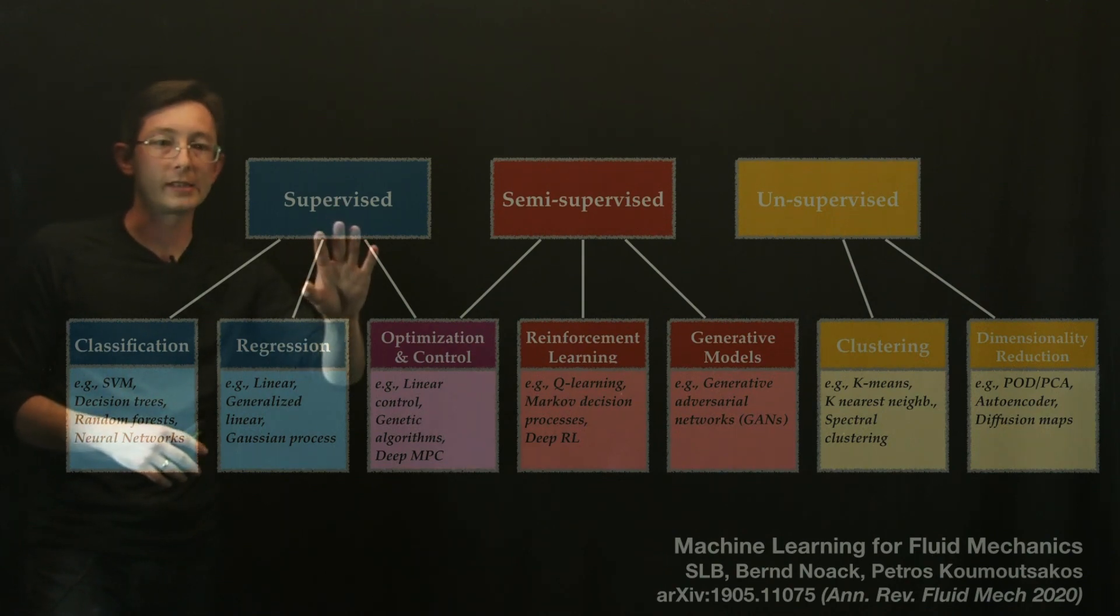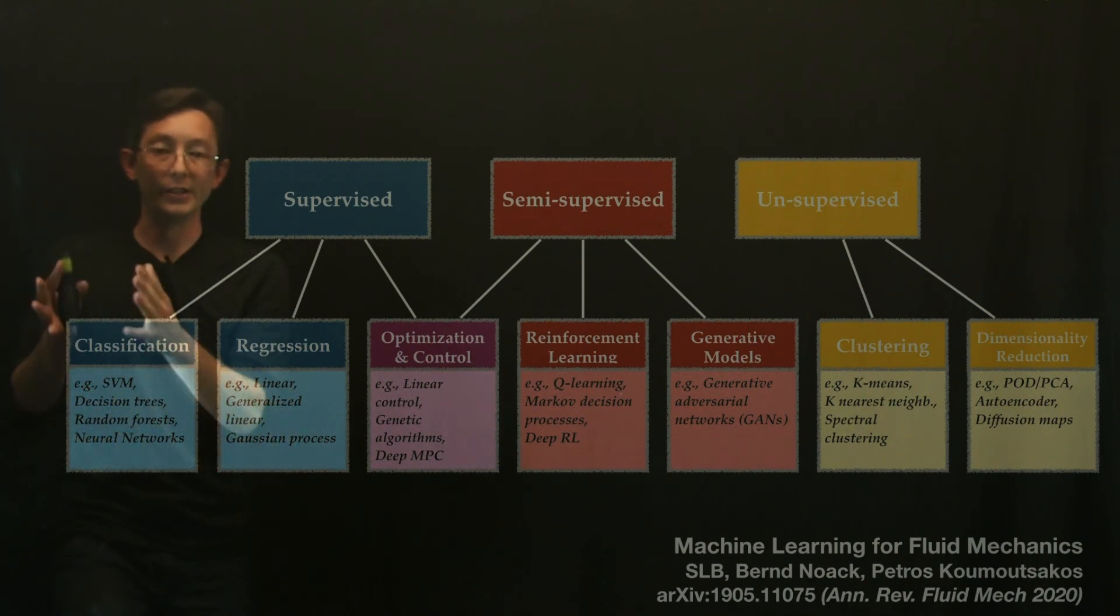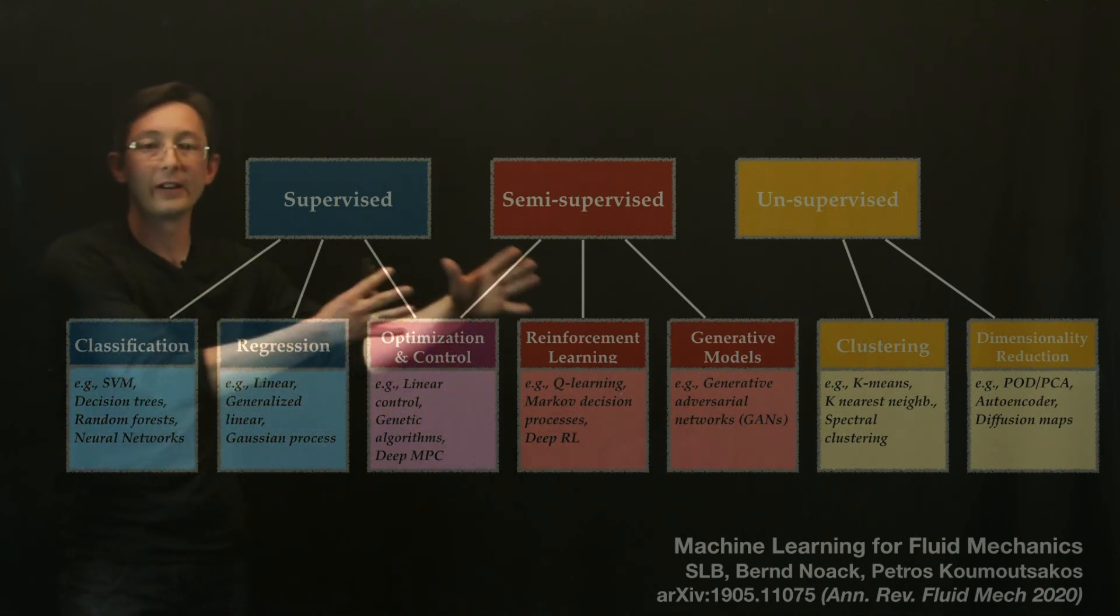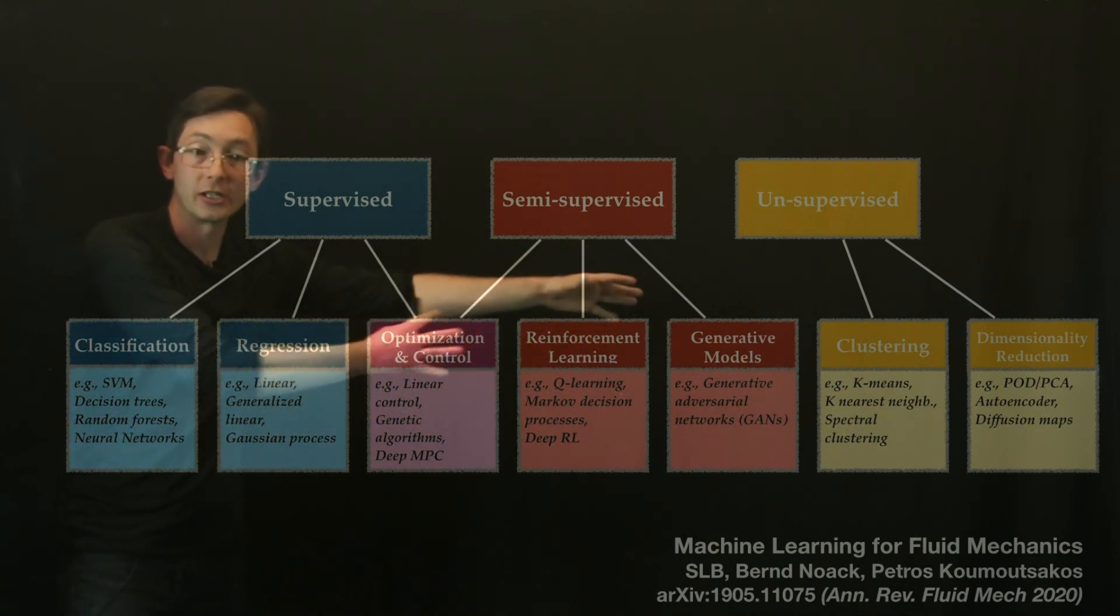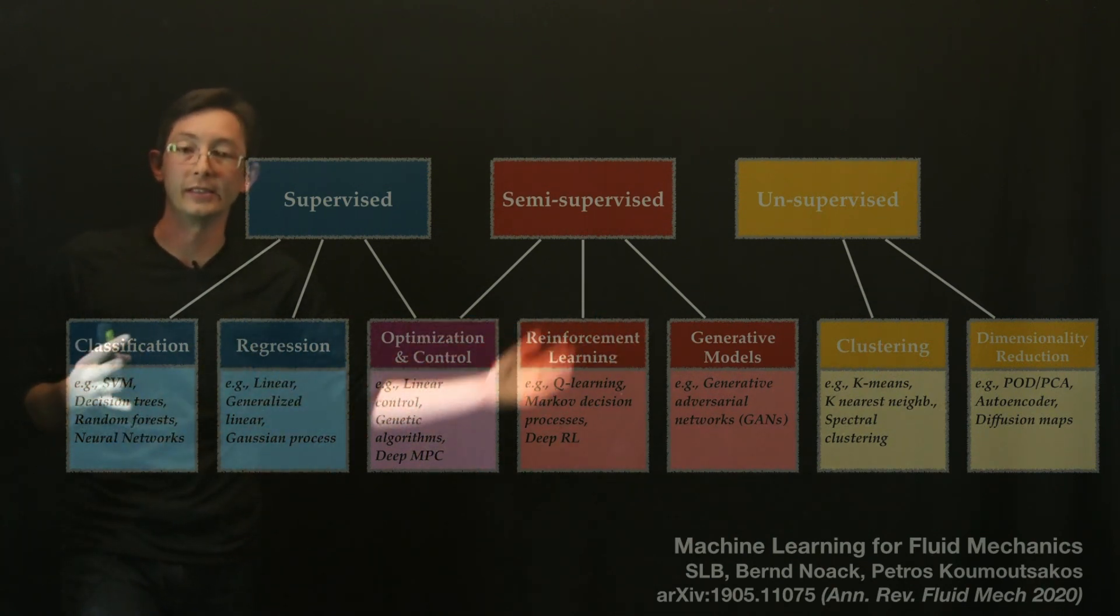But this is just another way of looking at that same flow chart. You have kind of supervised on one side, unsupervised on the other, and semi-supervised in the middle. And you can kind of categorize the various tasks you might want to do in machine learning and the different methods you have at your disposal in these categories.